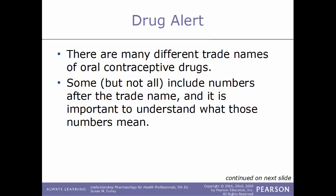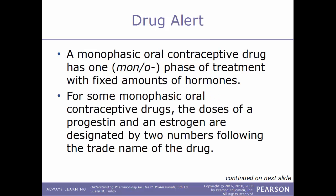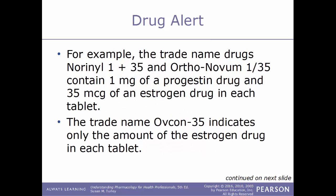There are many different trade names for oral contraceptive drugs, and some include numbers after the trade name that are important to understand. A monophasic contraceptive drug has one phase of treatment with fixed hormone amounts. For some monophasic oral contraceptive drugs, the doses of progestin and estrogen are designated by two numbers following the trade name. For example, Norinyl 1+35 and Ortho-Novum 1/35 contain 1 milligram of a progestin and 35 micrograms of an estrogen in each tablet.